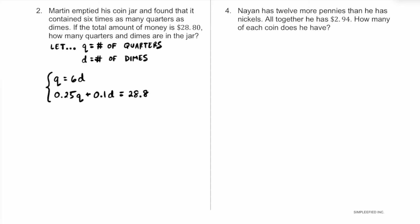This is our system of equations. Just like in the last example, let's clear the decimals from the second equation. We have hundredths as the greatest decimal place value, so multiplying everything by 100 gives us 25Q plus 10D equals 2,880. For the top equation, I'll leave it as is and use substitution since Q is already isolated.